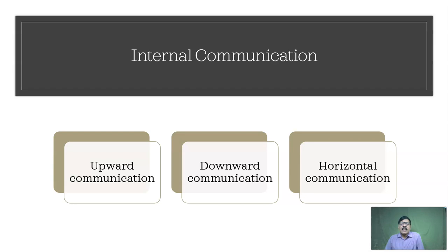In horizontal communication, the transmission is on a horizontal plane — for example, colleague to colleague. There is no hierarchy; it is basically on a plane level. This would include solving a problem for another person, accomplishing a task mutually, or teamwork. So in internal communication, it can be divided into three: upward communication, downward communication, and horizontal communication.